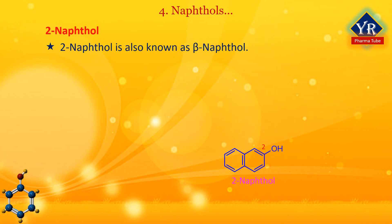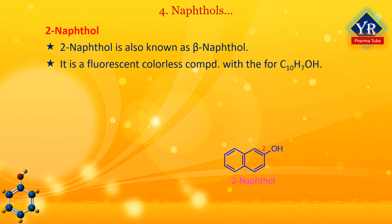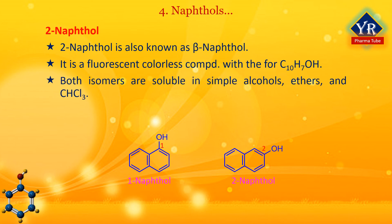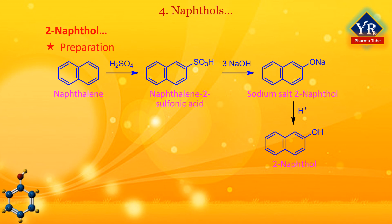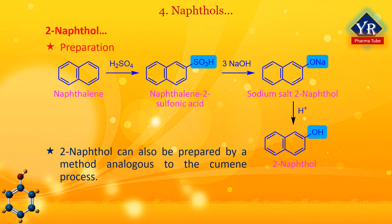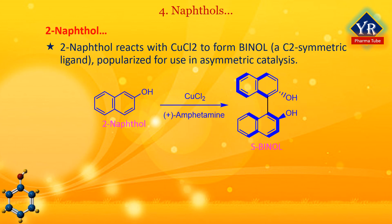2-naphthol is also known as beta-naphthol. It is a fluorescent colorless or occasionally yellow crystalline solid with the formula C10H7OH. It is an isomer of 1-naphthol differing by the location of the hydroxyl group on the naphthalene ring. The naphthols are naphthalene homologues of phenol but more reactive. Both isomers are soluble in simple alcohols, ethers and chloroform. Traditionally, 2-naphthol is prepared by a two-step process beginning with the sulfonation of naphthalene in sulfuric acid; the sulfonic acid group is then cleaved in molten sodium hydroxide, and neutralization of the product with acid gives 2-naphthol. 2-naphthol can also be produced by a method analogous to the cumene process. 2-naphthol reacts with cuprous chloride to form BINOL, a C2-symmetric ligand popularized for use in asymmetric catalysis.